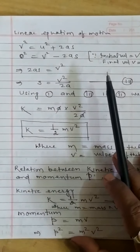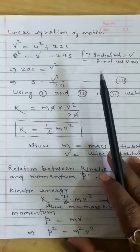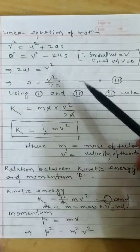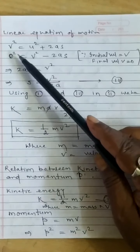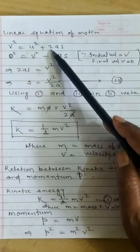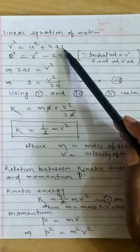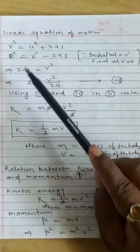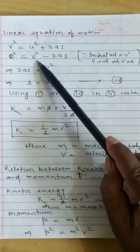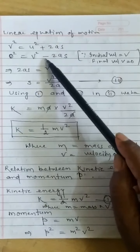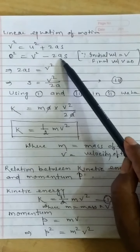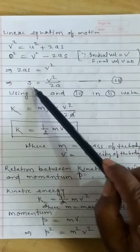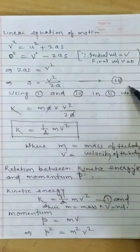By the linear equation of motion, we know that V² = U² + 2AS. Here U is initial velocity, V is final velocity, A is uniform retardation, and S is distance. Since final velocity is 0, initial velocity is V, and retardation is −A: 0 = V² − 2AS, so 2AS = V², giving S = V² / 2A. This is equation number 3.